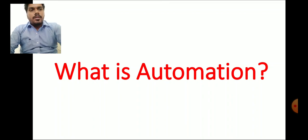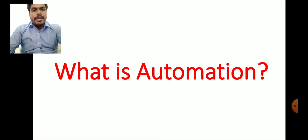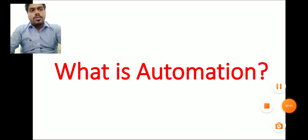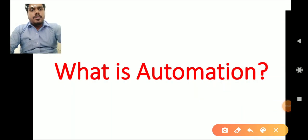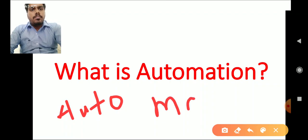Auto means self. The second word is 'matos' — M-A-T-O-S — which means moving. So 'automatos': auto means self, matos means moving.